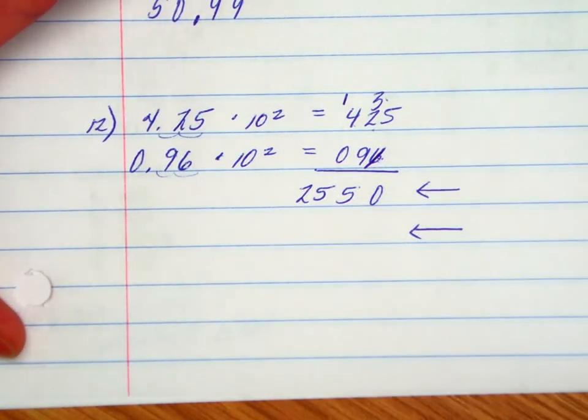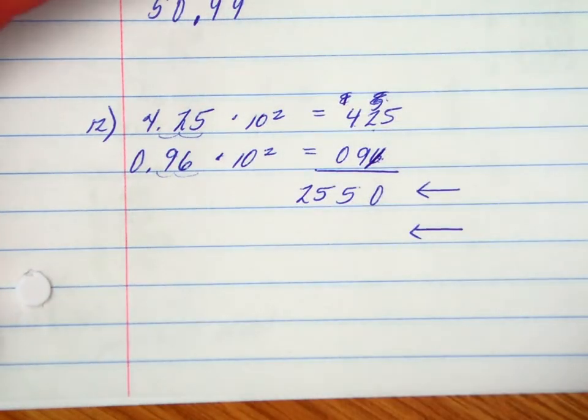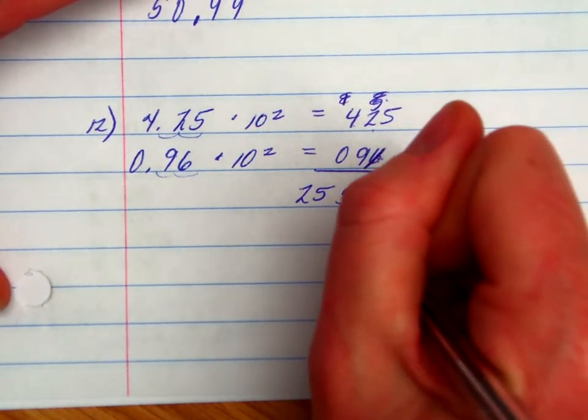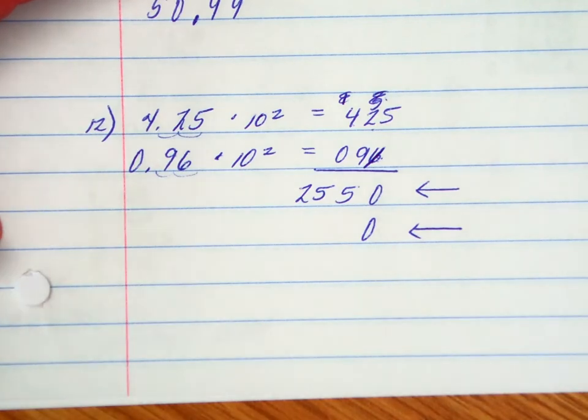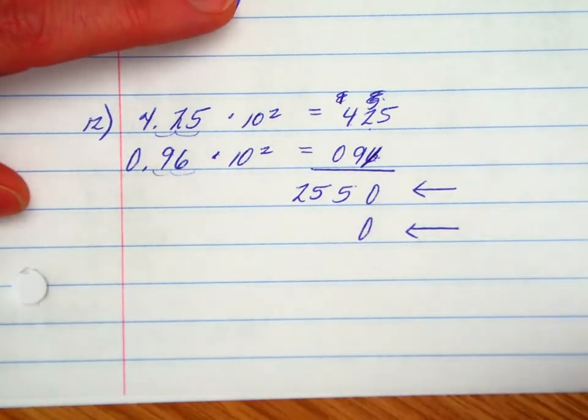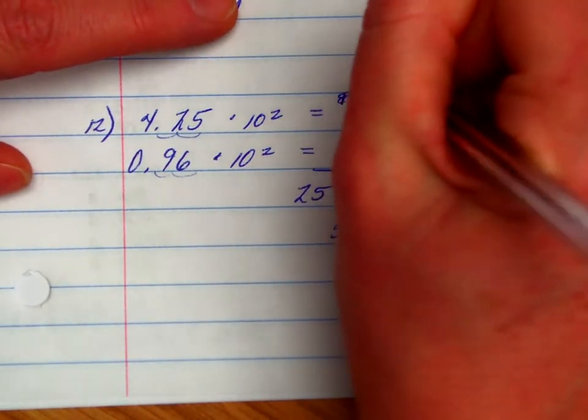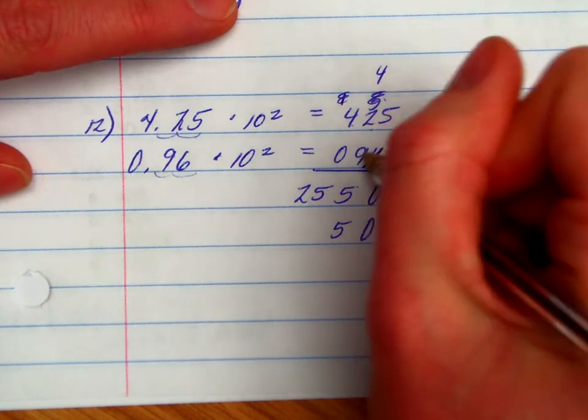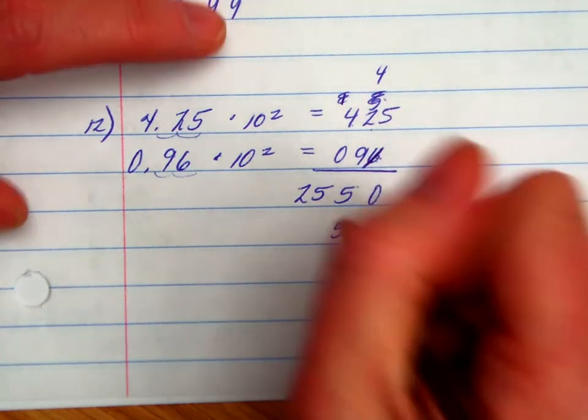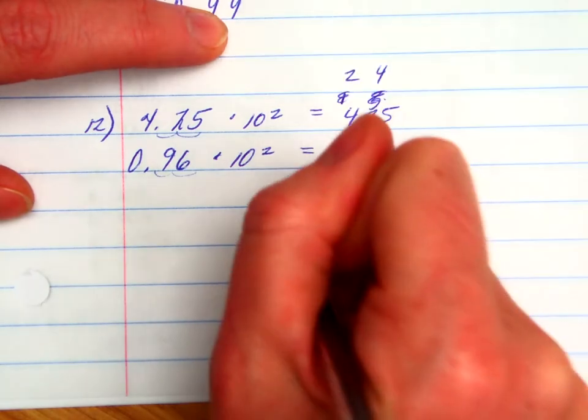I have taken care of the ones place partial product. Now I'm going to work on the next partial product. I like to cross out the ones that carried over before so I don't get mixed up. Since I've already worked out the ones place, I'm going to put a placeholder here. 9 times 5 is 45, put down the 5, carry the 4. 9 times 2 is 18, plus 4 feels like 22. 9 times 4 is 36, plus 2 is 38.